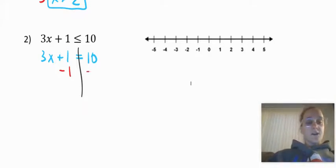Whatever I do on one side, I have to do on the other side. So I have a 0 pair right here. So if I bring down what I have left over on the left, I just have 3x equals, and then 10 minus 1 is 9.